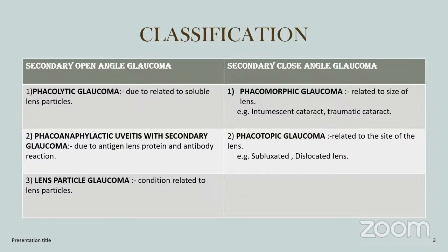Classification: it is based upon secondary open-angle glaucoma and secondary closed-angle glaucoma. Secondary open-angle glaucoma includes phacolytic glaucoma due to soluble lens particles, phacoanaphylactic due to uveitis with secondary glaucoma from antigen-antibody complex attached to the trabecular meshwork, and lens particle glaucoma related to residual lens particles after cataract surgery. Secondary closed-angle glaucoma includes phacomorphic glaucoma related to increased lens size, such as intumescent or traumatic cataract, and phacotopic glaucoma related to position of the lens, including subluxated and dislocated lens.